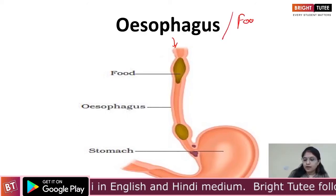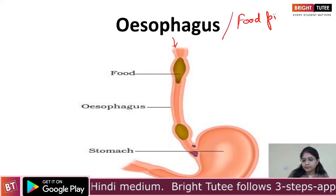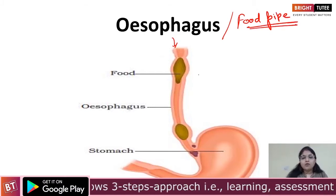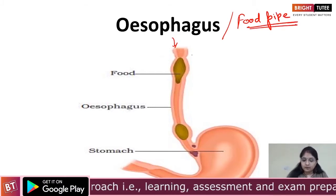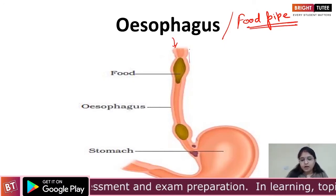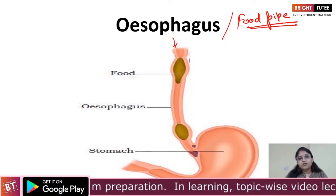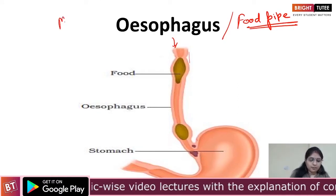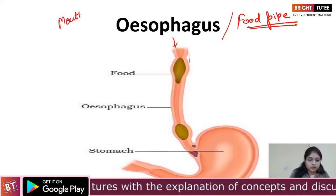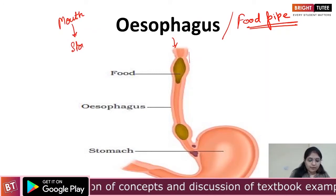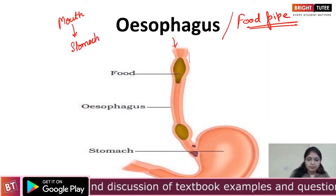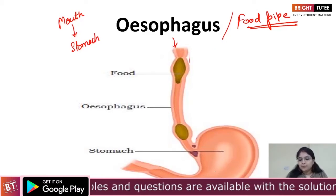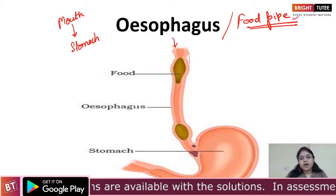The esophagus is also called the food pipe. Why is it called the food pipe? First of all, it looks like a pipe, and it is used to transport food from the mouth to the stomach. So whatever food we swallow passes through the esophagus and then goes to the stomach — that is why it is also known as the food pipe.